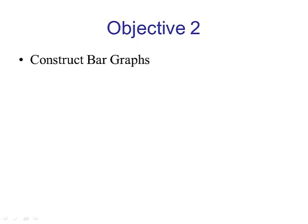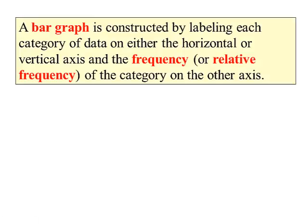Lesson objective number two, construct bar graphs. A bar graph is constructed by labeling each category of the data on either the horizontal or the vertical axis, and the frequency, or it could even be relative frequency, of each category on the other axis.